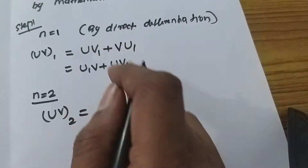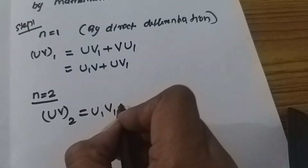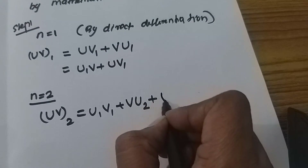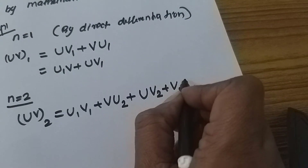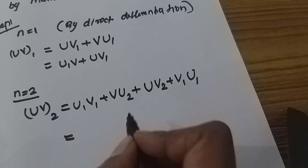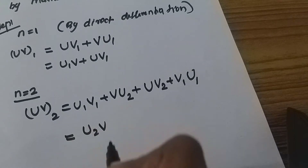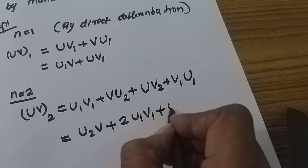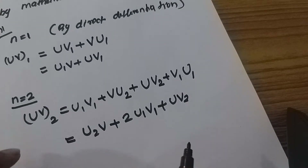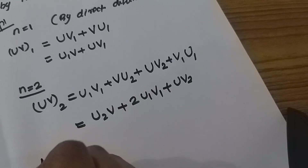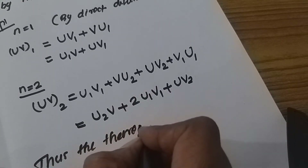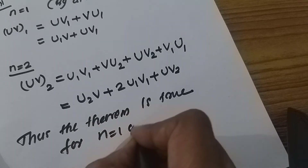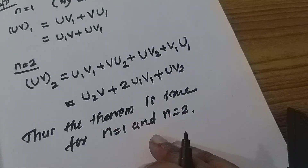Applying the product rule to four terms: u1 derivative of v1 plus v times u1 second derivative of u, plus uv2, plus v1 derivative of u1, giving 2u1v1 plus u2. So the theorem is true for n equal to 1 and n equal to 2.